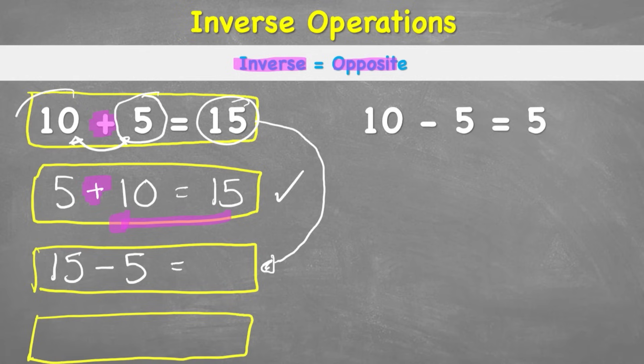Equals, and then the last number should be 10. Let's check if that works. 15 subtract 5 equals 10. Yes, it does. Therefore, I have my third number family.